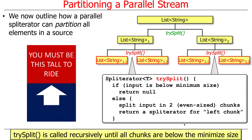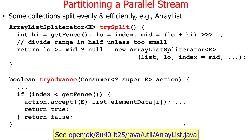trySplit is called recursively until all chunks are below a minimum size. It's like an amusement park ride that says 'you must be this tall to ride' — it keeps splitting until it reaches a size that's too small to split further. That's basically how that works.